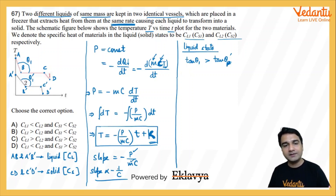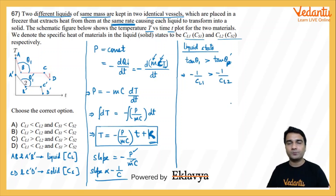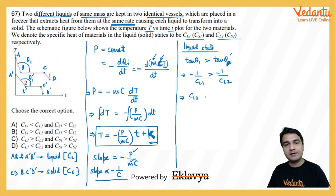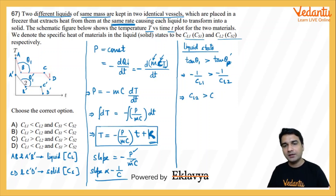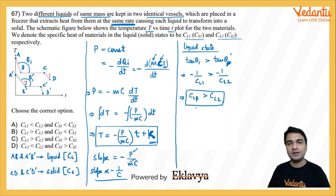Replacing the slope values of tan(theta) with 1 over C, we get the relation: minus 1 over CL1 is greater than minus 1 over CL2. Simplifying this — compensating for the negative sign and the inverse — we conclude that CL1 is greater than CL2.